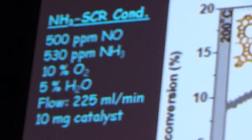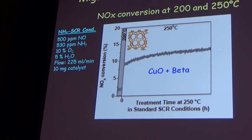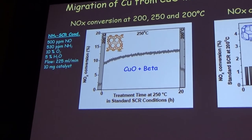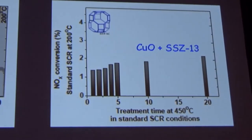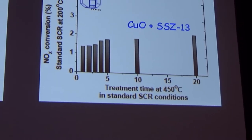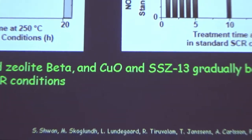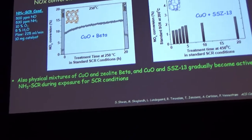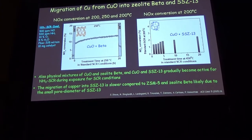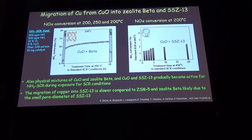We can see these effects for other types of zeolites too. For the large-pore copper beta zeolite, we see almost no activity from the start, then a gradual increase with time of treatment at 250 degrees, and considerably higher activity upon returning to 200 degrees. For the copper Chabazite structure with small pores, we need to go up to 450 degrees, but we still see a gradual increase with treatment time. The higher temperature required is likely due to the smaller pore diameter of the Chabazite zeolite.